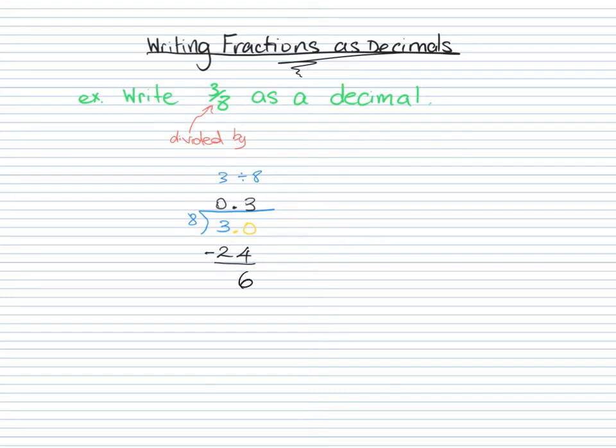And now we're going to keep that number going, and we're going to carry that down there. And now we can ask ourselves, how many times does 8 go into 60? And that is going to be our next number that goes in this spot. How many times does 8 go into 60? 8 goes into 60 7 times with a remainder.